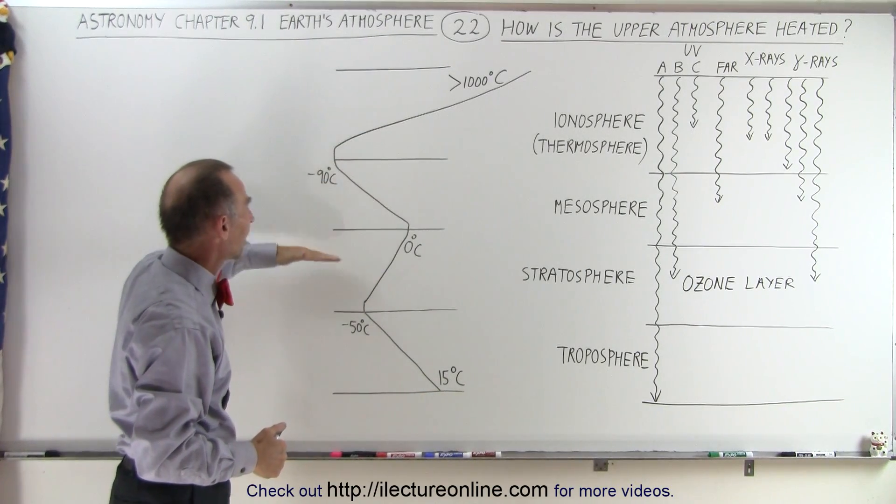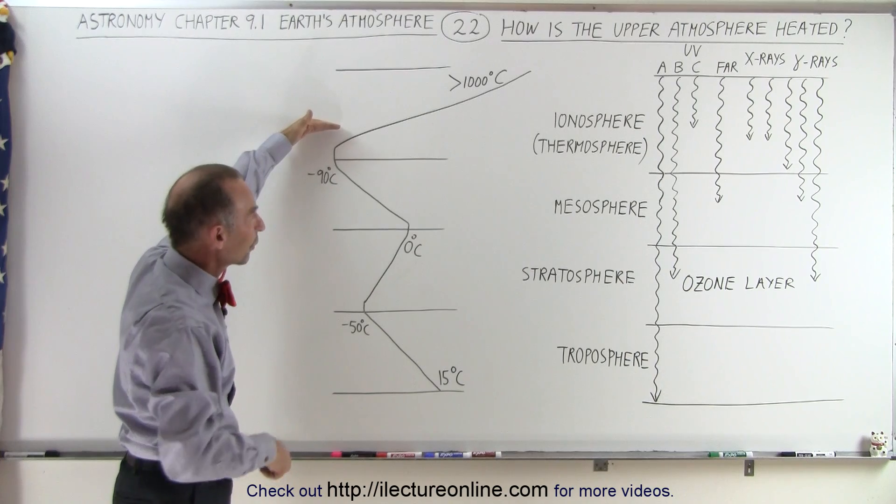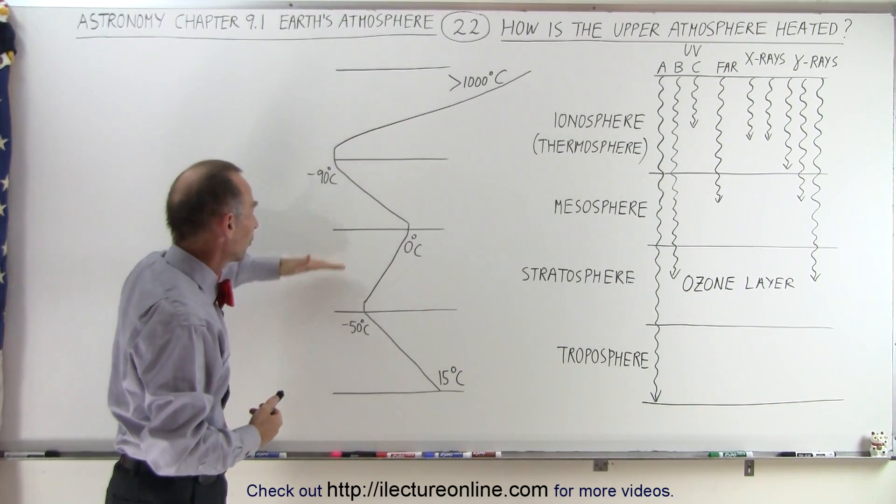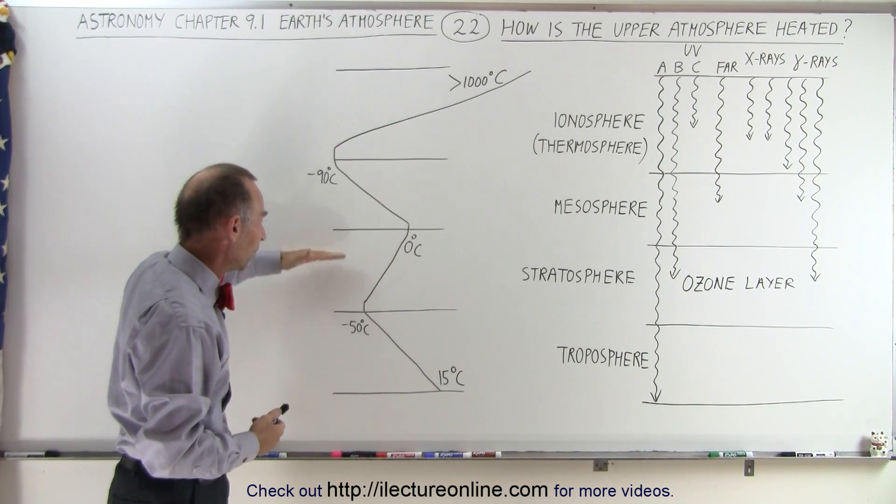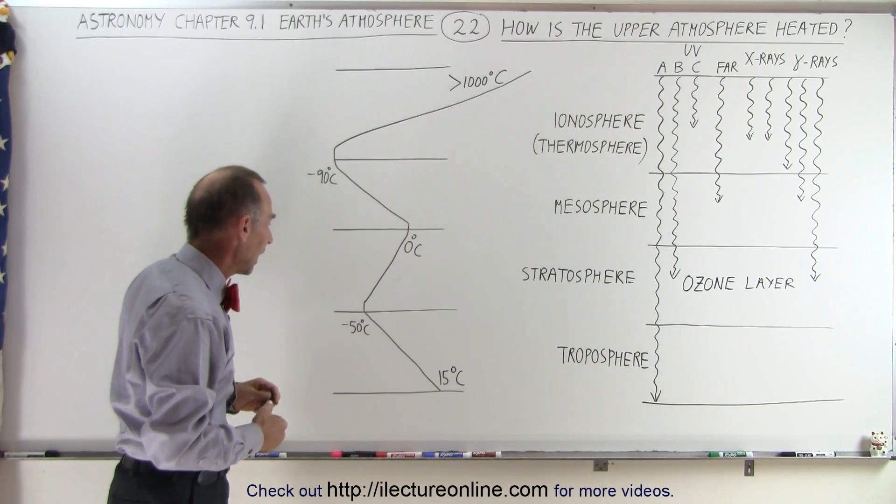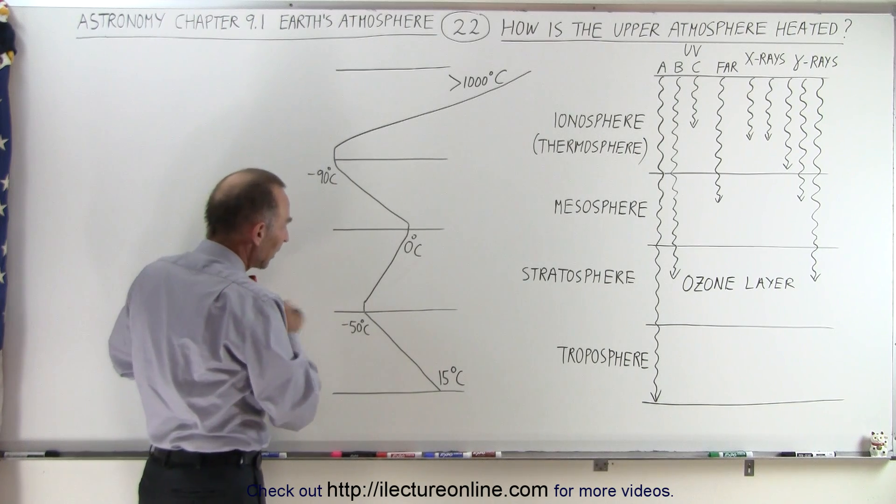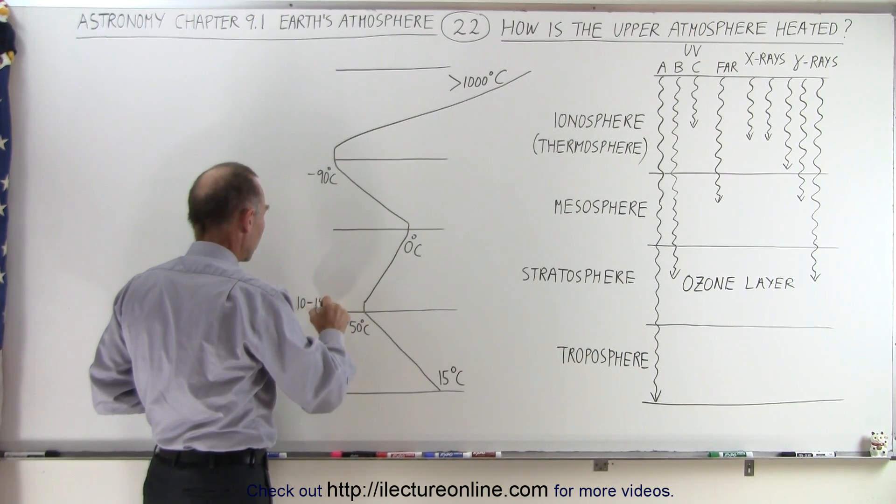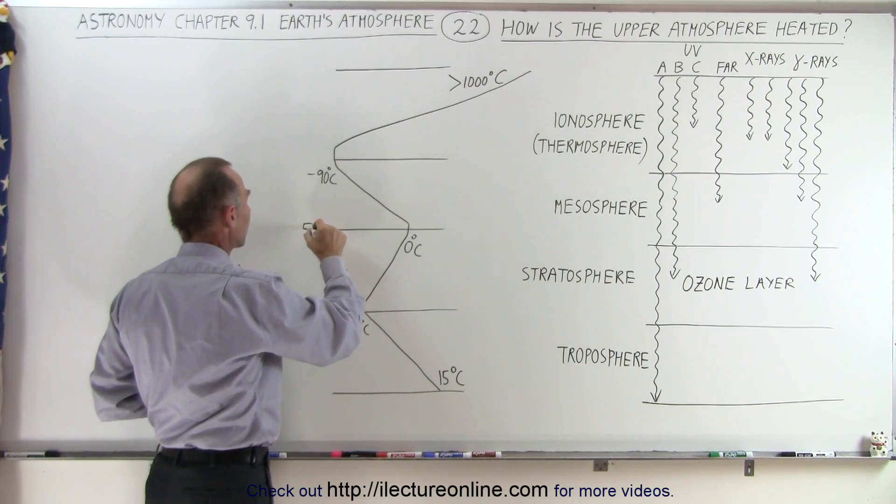And we can see the effect it has on the atmosphere. The ionosphere or thermosphere gets heated quite a bit to a tremendous amount, and we can also see that for being this far up in the atmosphere, typically from about 10 to 15 kilometers all the way up to almost 50 kilometers.